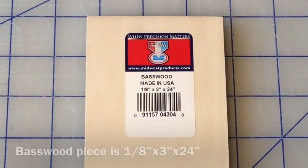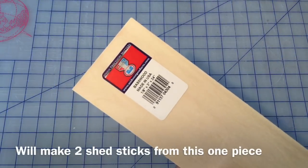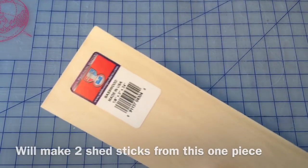I went to my local art store and picked up a piece of basswood 1 1/8 inch by 3 inches by 24 inches. Basswood is heavier than balsa wood. Balsa wood is quite flimsy.